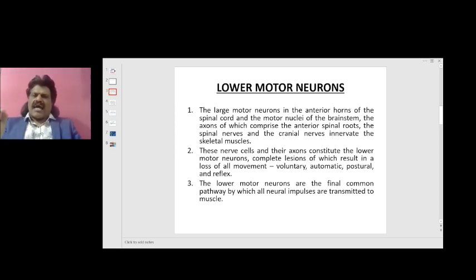These nerve cells and their axons constitute the lower motor neurons, complete lesions of which result in loss of all movement: voluntary, automatic, postural, and reflexes. The lower motor neurons are the final common pathway by which all neural impulses are transmitted to muscle.